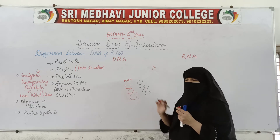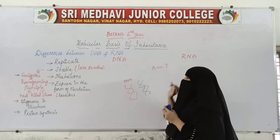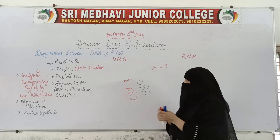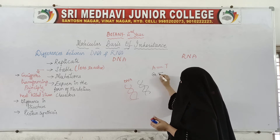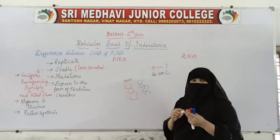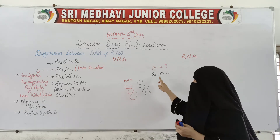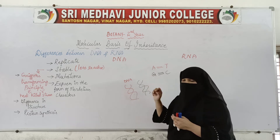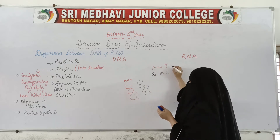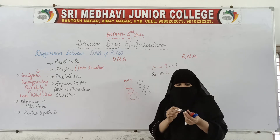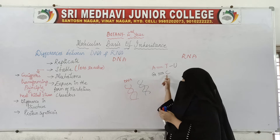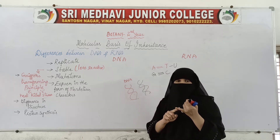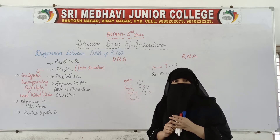Adenine always pairs with thymine, and guanine always pairs with cytosine. In the case of RNA, adenine always pairs with uracil. So both DNA and RNA follow complementarity base pairing rules.